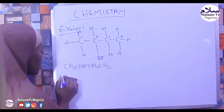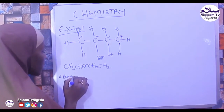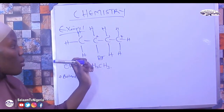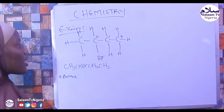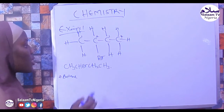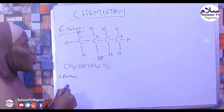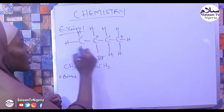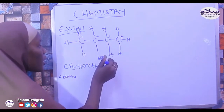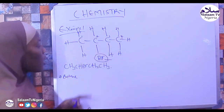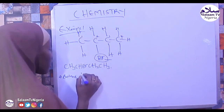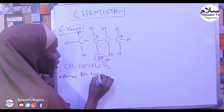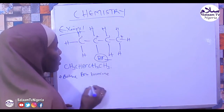So we will get butane as the parent name. Next, we name any substituent present. We have a substituent here — it is bromine (Br). Since it is bromine, we call the substituent bromo.